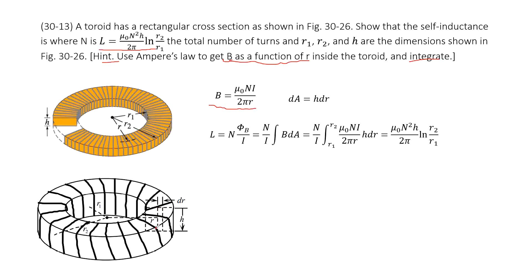For this small strip, this small bar, you can see the length is dR, and this side length is h. So the cross-sectional area for this bar is dA equals h times dR. The magnetic field B is there.